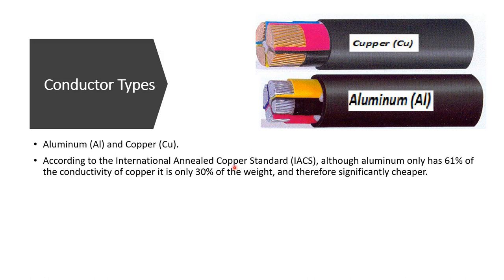For the same cross-sectional area, aluminum has only 30% of the weight of copper, meaning aluminum is lighter. This also makes aluminum cheaper than copper. So the advantage of copper is higher conductivity and current-carrying capacity, while aluminum is cheaper and lighter.